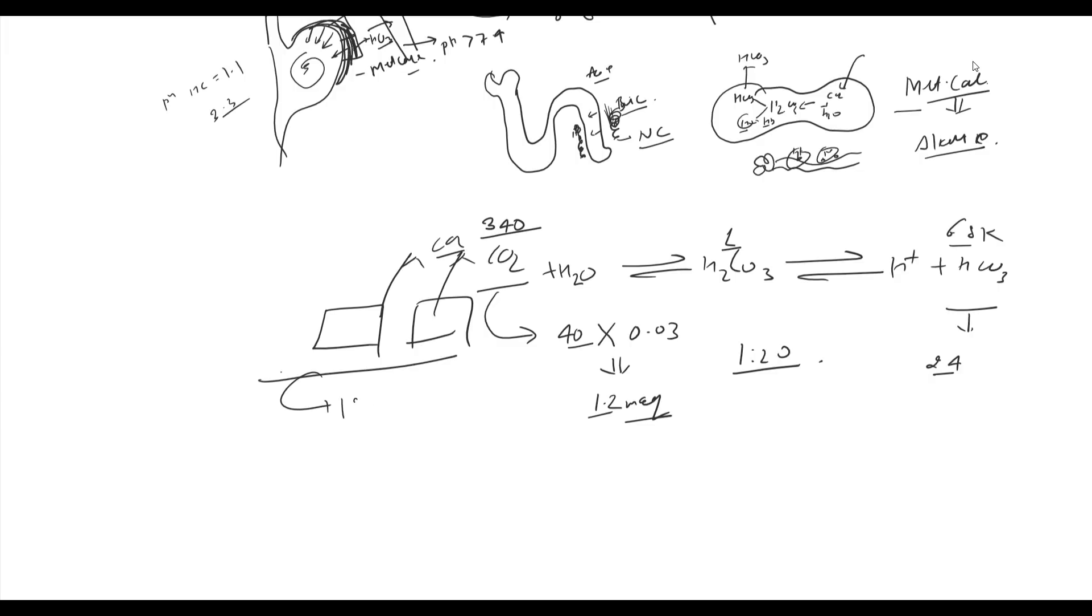Daily, 15,000 to 20,000 mmol of CO2 is generated. This is known as volatile acid. CO2 handling is done by lungs. When CO2 level increases, alveolar ventilation increases and CO2 level comes down. When CO2 decreases, alveolar ventilation decreases to normalize PCO2.